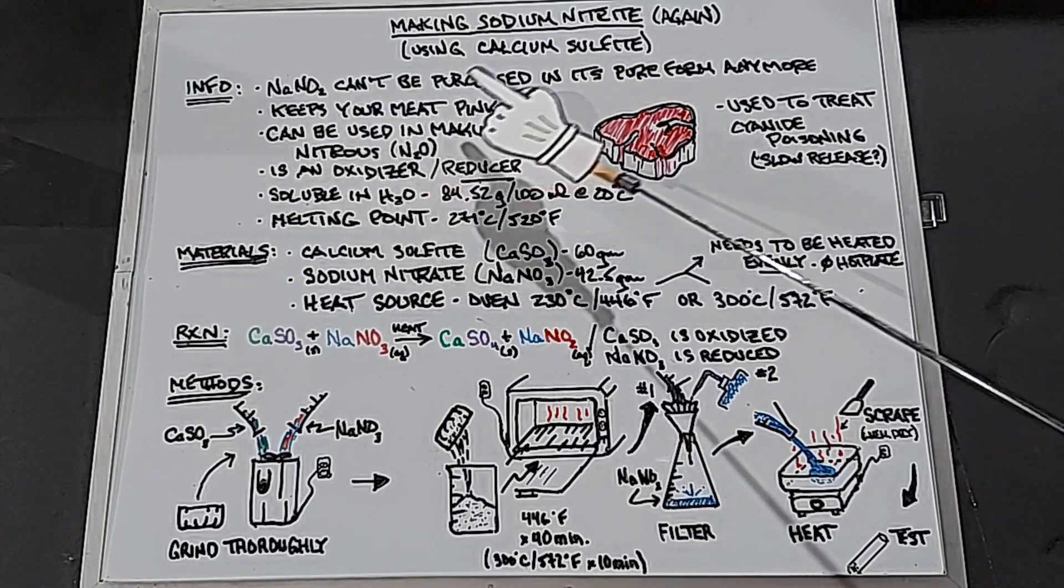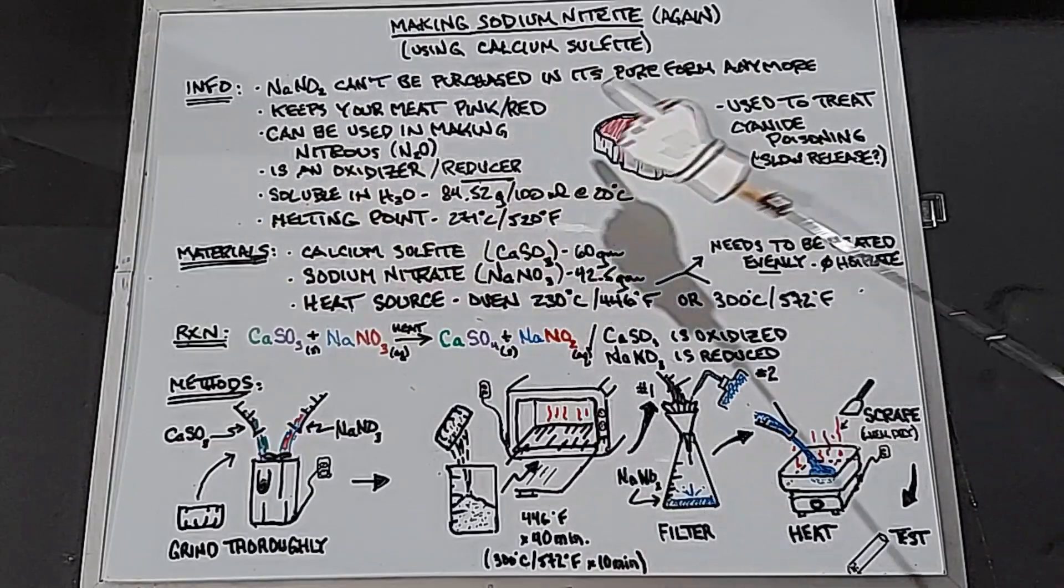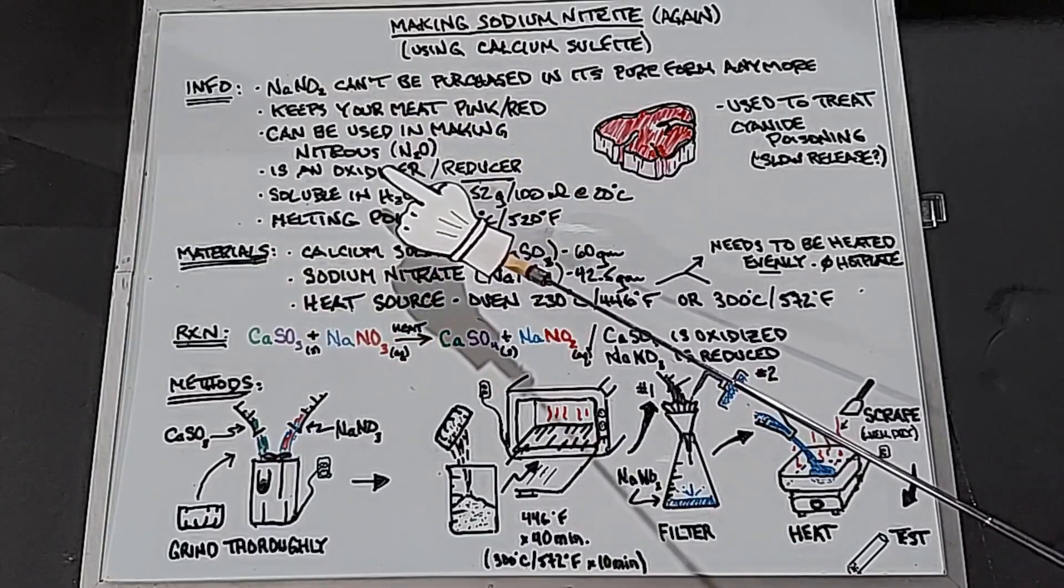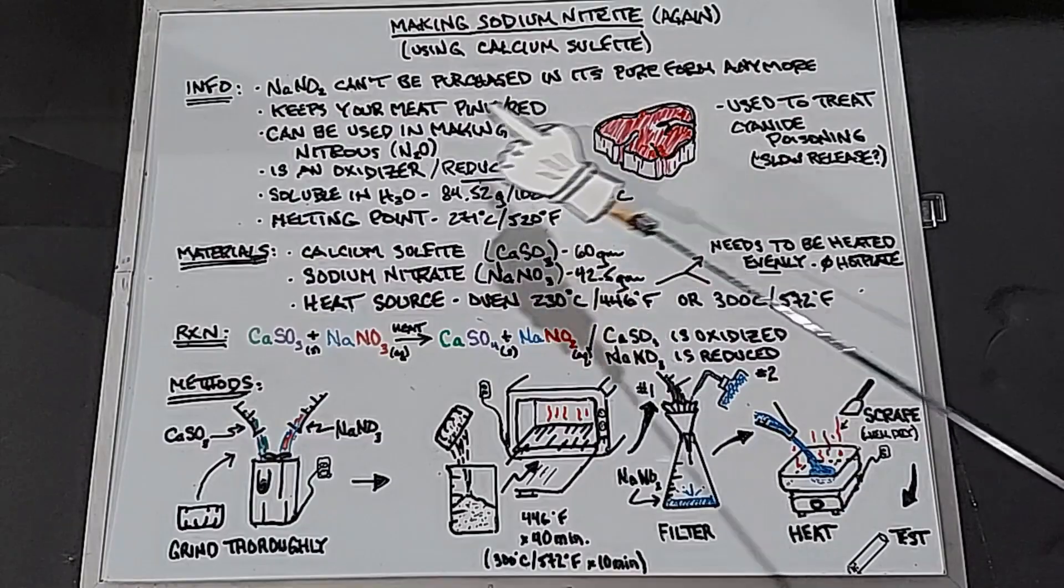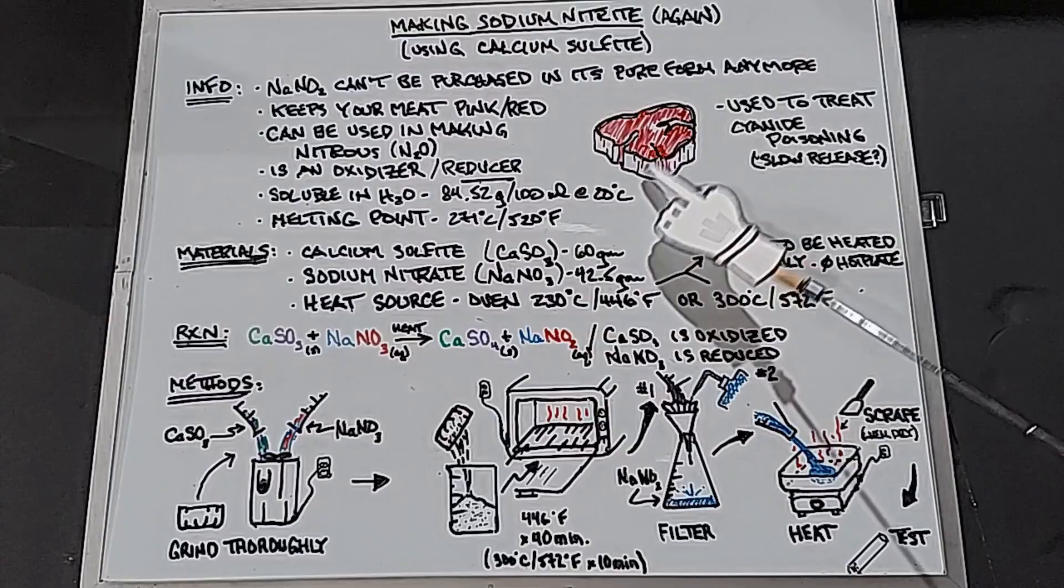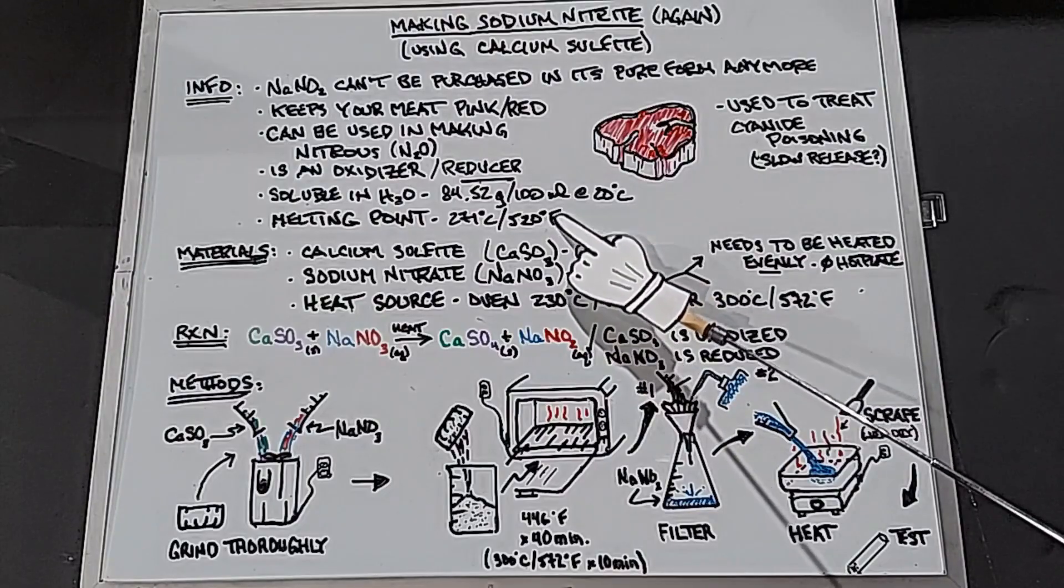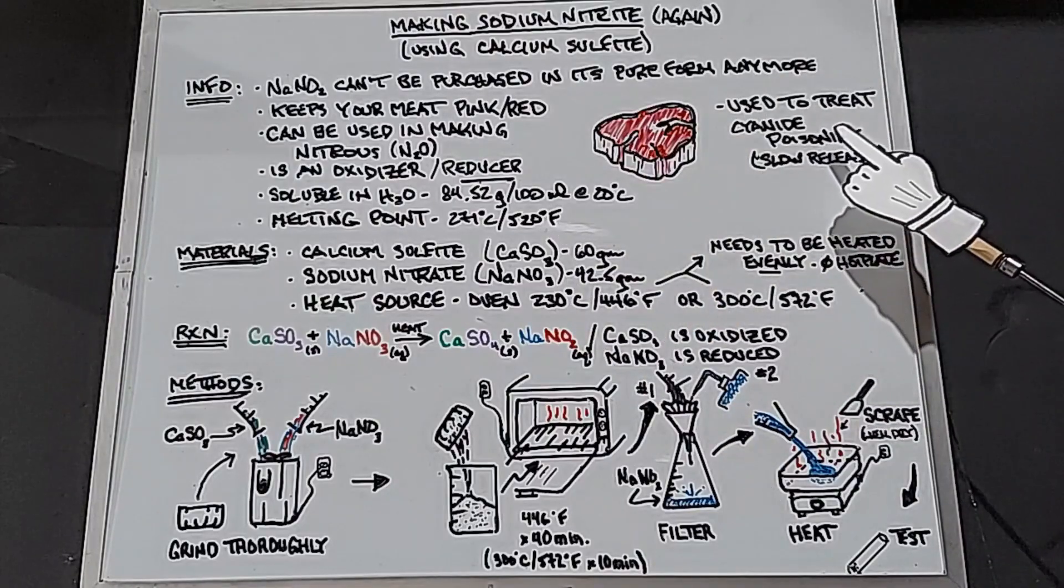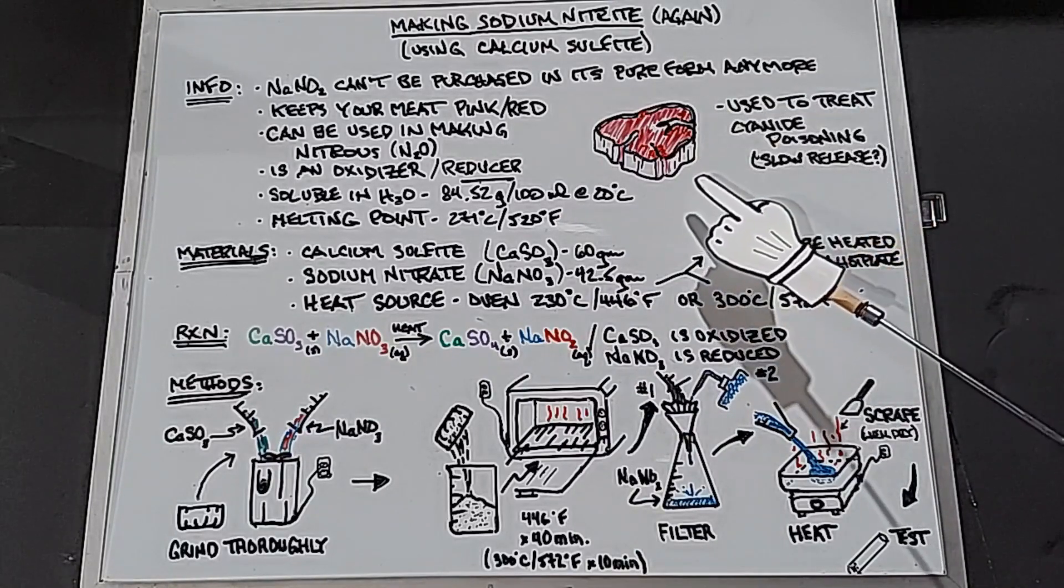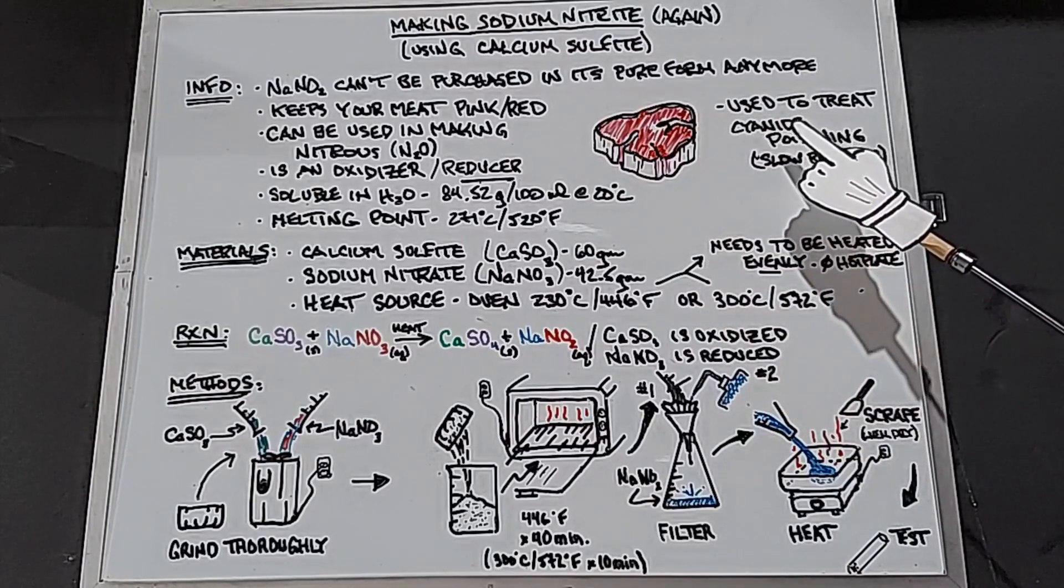The information: sodium nitrite can't be purchased in its pure form anymore, at least in the United States. Its number one use is to keep your meat pink or red. It can be used in making nitrous, which I've done before in a previous video. It's both an oxidizer, but much more often used as a reducer. It's very soluble in water: 84.52 grams per 100 milliliters at 20 degrees, quite soluble. It has a melting point of 271 degrees Celsius or 520 degrees Fahrenheit. It's also used to treat cyanide poisoning, which is a little confusing because I don't know many people who would take cyanide and then end up making it for treatment, unless you're taking the slow release form. Anyways, apparently it does work for cyanide poisoning.